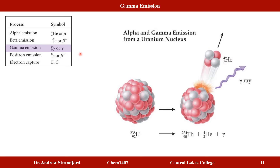Gamma emission often occurs simultaneously with other nuclear reactions. For example, uranium-238 undergoes alpha decay, emitting an alpha particle and simultaneously releasing a gamma ray — electromagnetic radiation that is very high in energy and damaging to human and biological tissue. By losing two protons, uranium becomes thorium with 90 protons, while emitting a high-energy gamma ray.